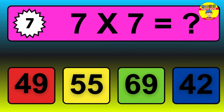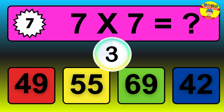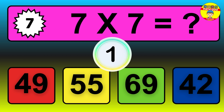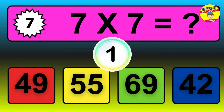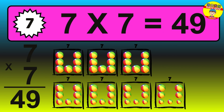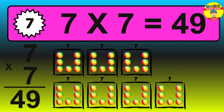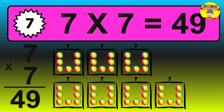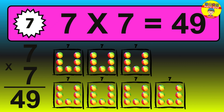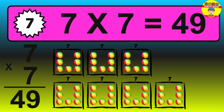Question 7. 7 times 7 equals what? The answer is 7 times 7 is 49. To calculate, we have 7 groups with 7 balls each one. So, how many balls do we have? 49 balls.